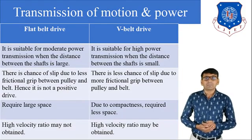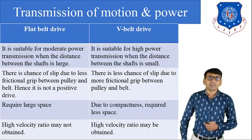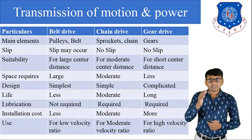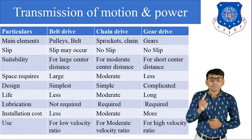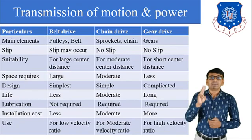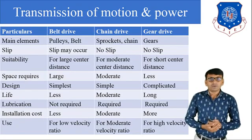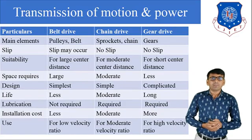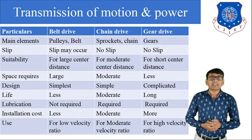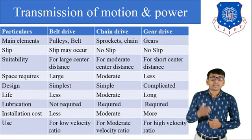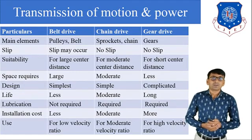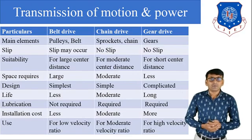Now we start the comparison between three drives used for power transmission: first belt drive, second chain drive, and third gear drive. First topic — main element: in belt drive, pulley and belt are the main elements; in chain drive, sprocket and chain are the main elements; and in gear drive, gear one and gear two are the main elements.